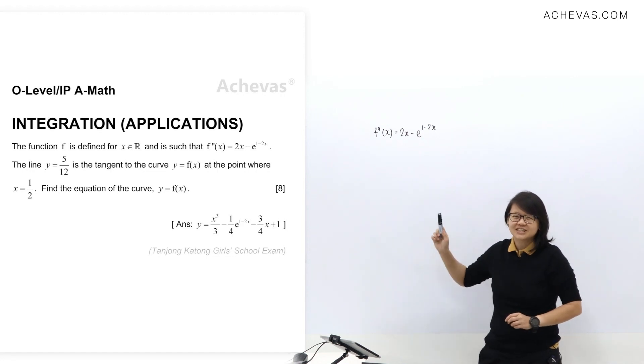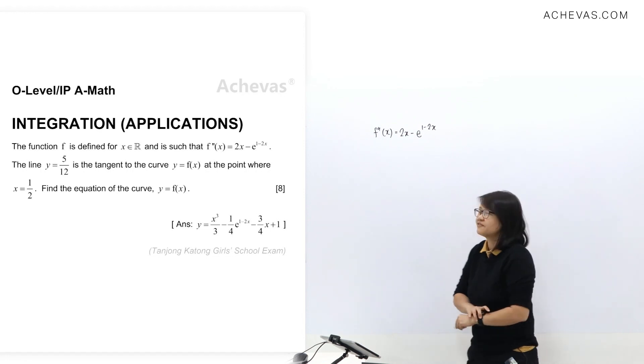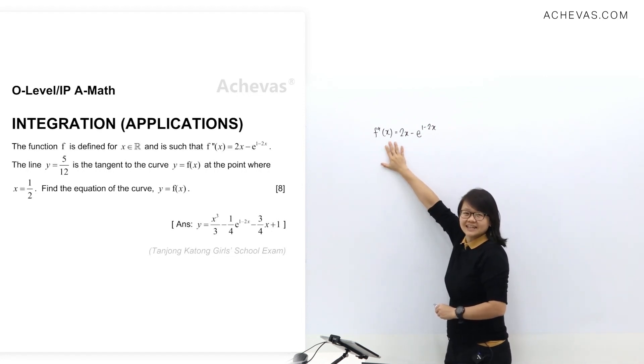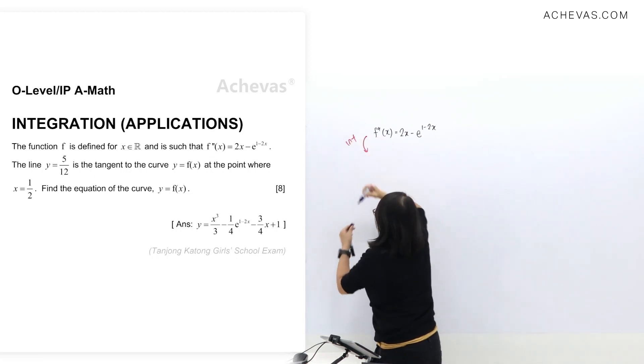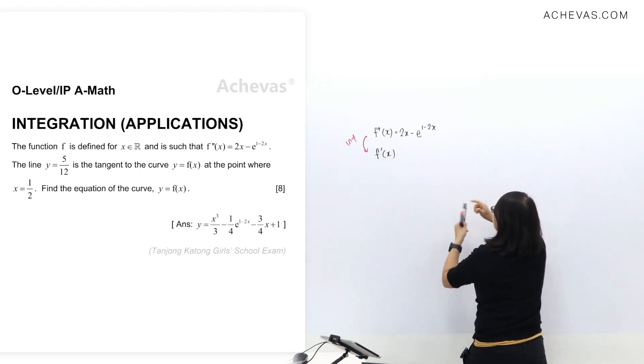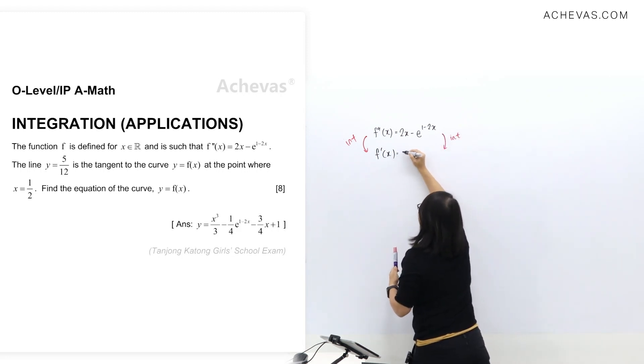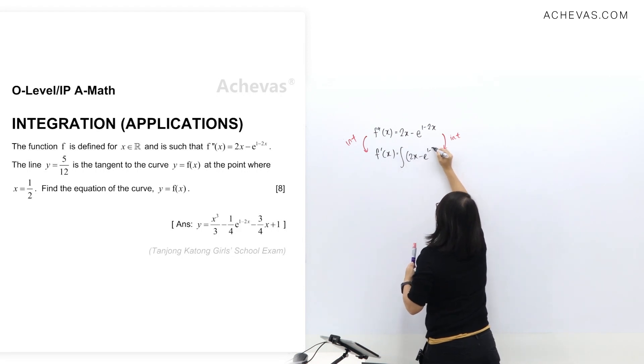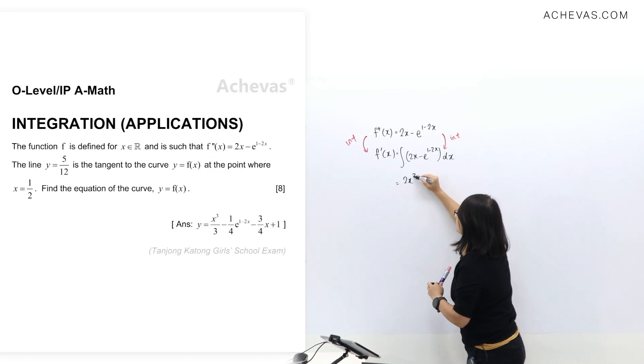Therefore you need to have the actual information. Usually the question will give you gradient and a point, but this question is a bit interesting - it didn't give you the gradient directly. We'll look at it later. Let's start this question by first doing the first integration. From f''(x), if I integrate this one here, I will lower this down to f'(x). I'll do the same on the right here. If I integrate this one here, I'm going to write the symbol of integration.